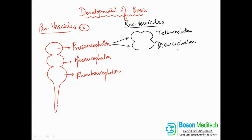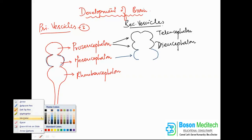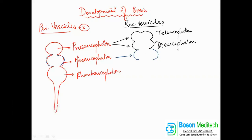The mesencephalon will not change — it develops into a secondary vesicle and that secondary vesicle remains as the mesencephalon. Finally, the rhombencephalon also develops into two secondary vesicles: one being the metencephalon and the other one being the myelencephalon.